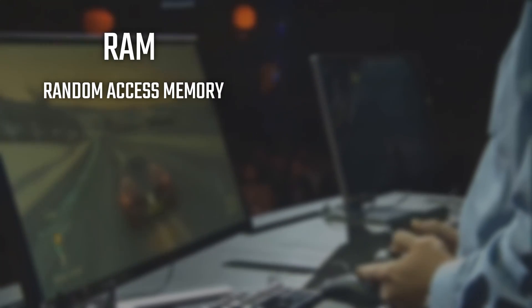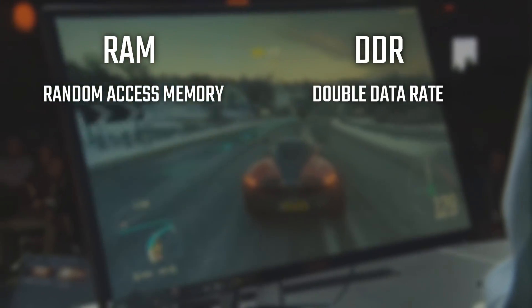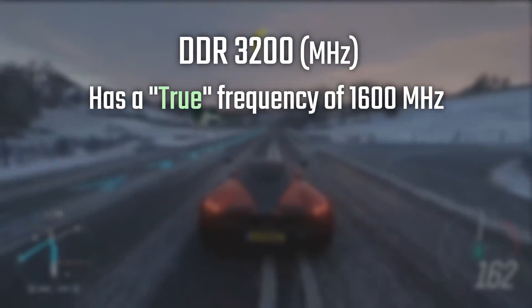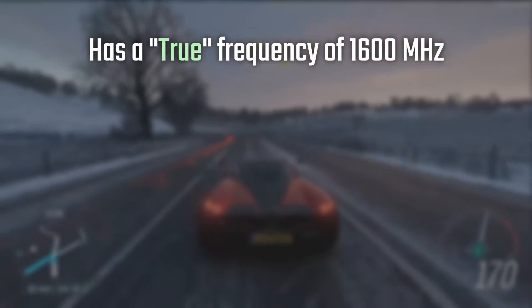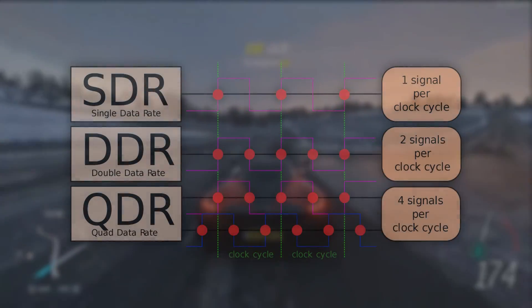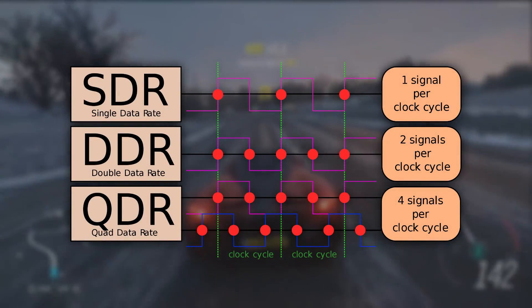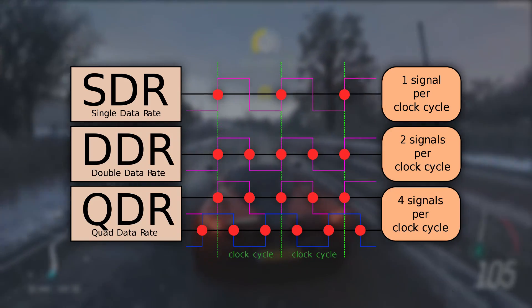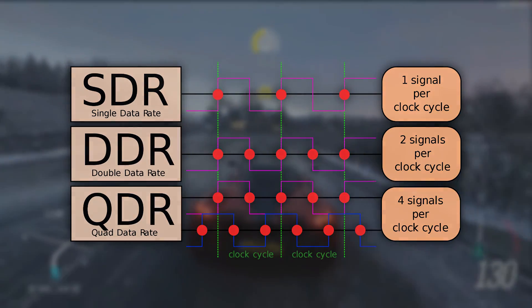RAM means random access memory, and DDR means double data rate. So DDR, for example DDR4-3200, will actually have a true frequency of 1600 MHz. But since it transfers data on both rising and falling edges of the clock signal, having two signals per clock cycle, it is considered 3200 MHz.